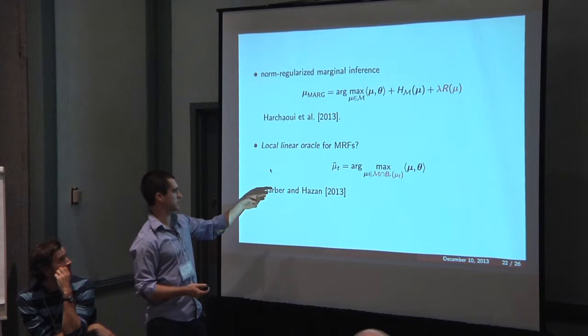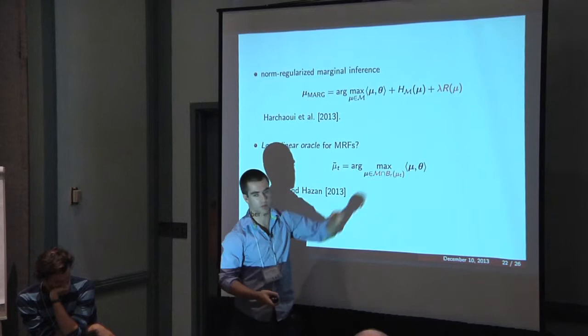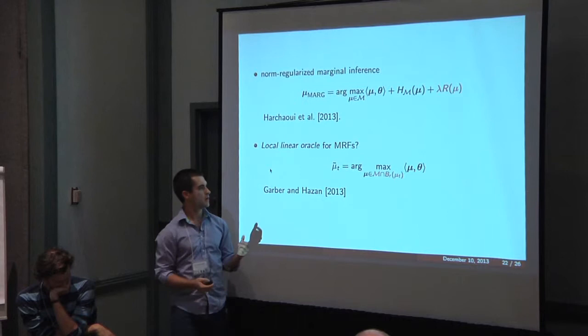You could solve this using these composite minimization frameworks. An alternative is, there's this recently proposed idea of having what's called a local linear oracle. So basically rather than just solving a linear problem over your set, you solve a linear problem subject to not going too far from where you are now. You basically have a ball of radius r from your previous iterate.